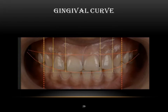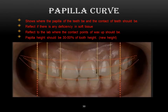I determine my gingival curve corresponding to the upper lip, and it indicates whether gingivectomy is needed. Any teeth under this line should undergo gingivectomy. I also have a third line — the papilla curve — which shows where the papilla of the teeth should be and where the contact points of the teeth should be. The contact point of the restoration is determined by the papilla curve, and it reflects any deficiency in soft tissue.